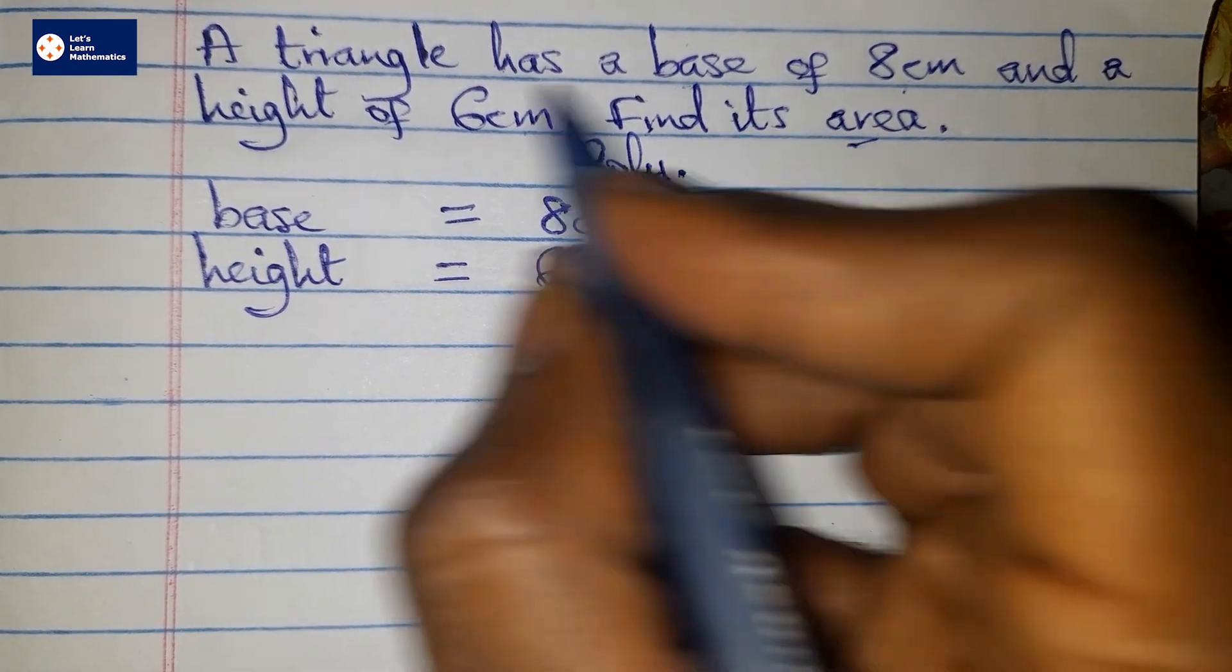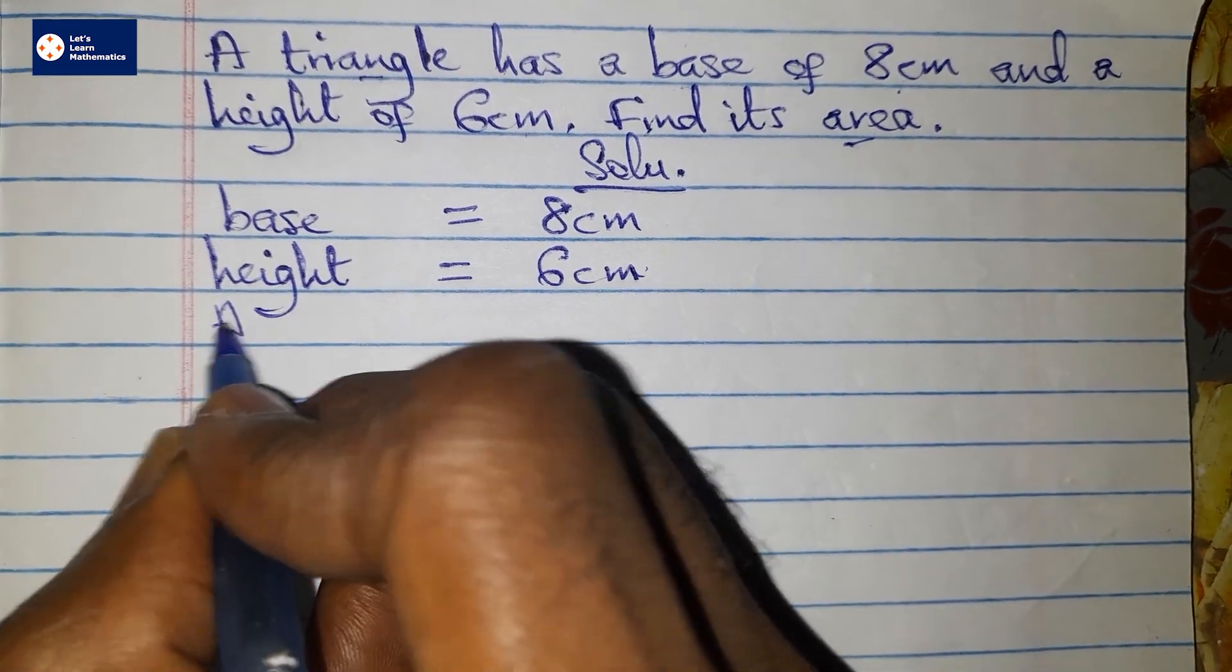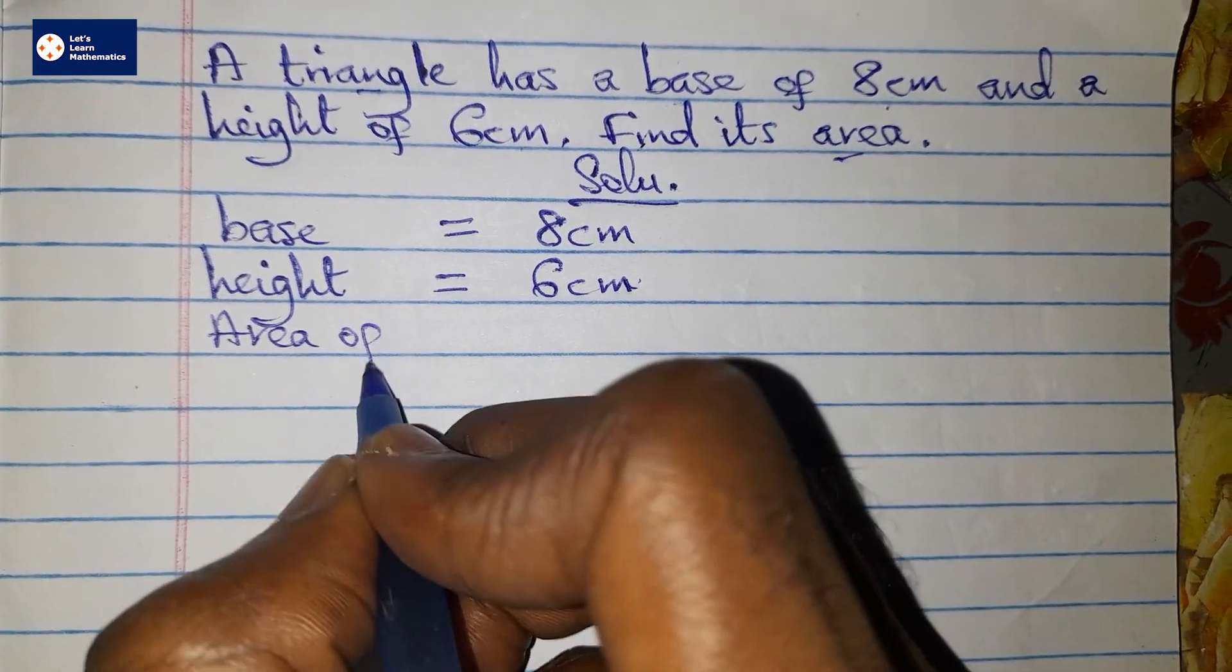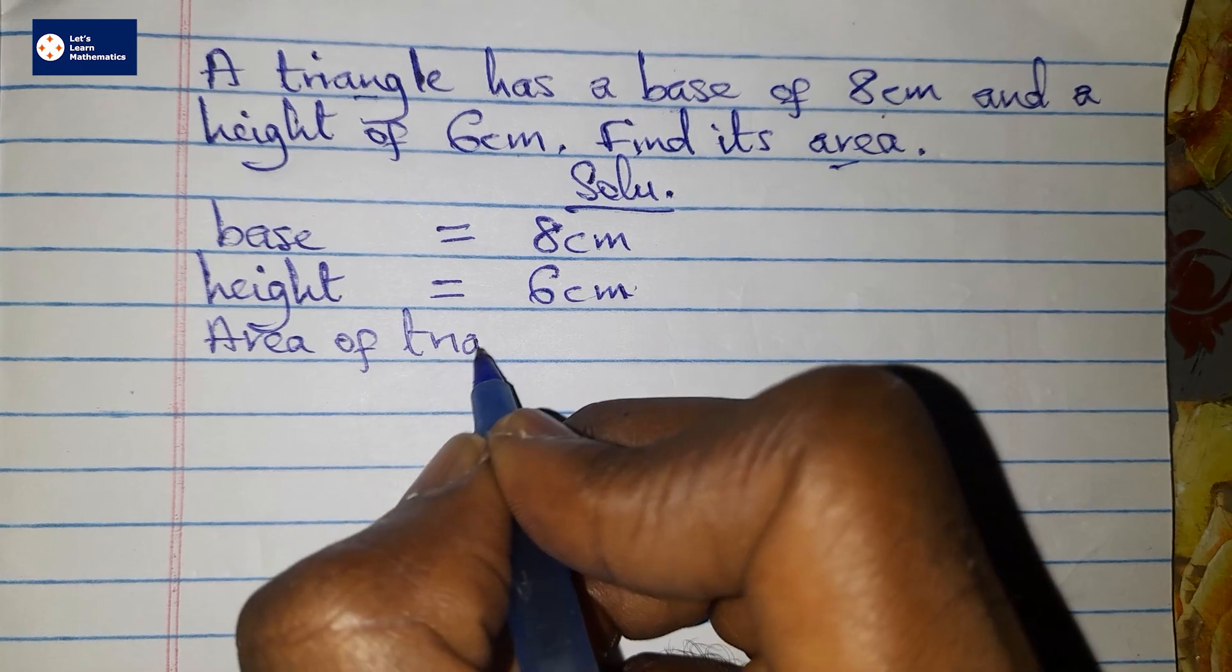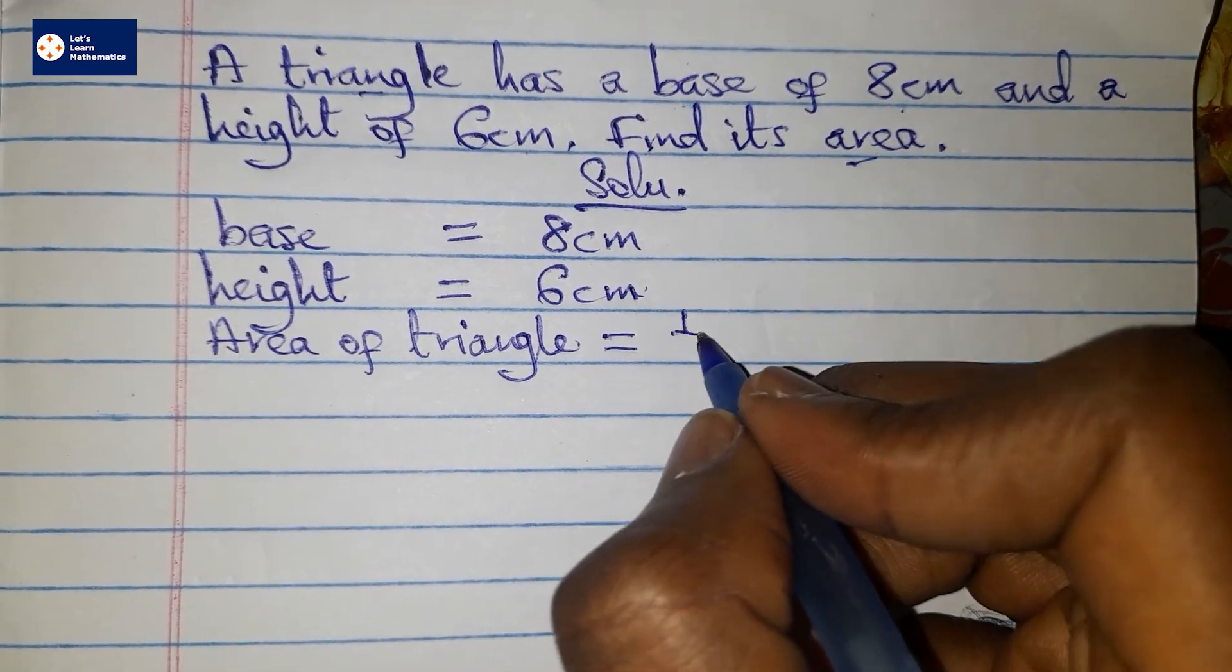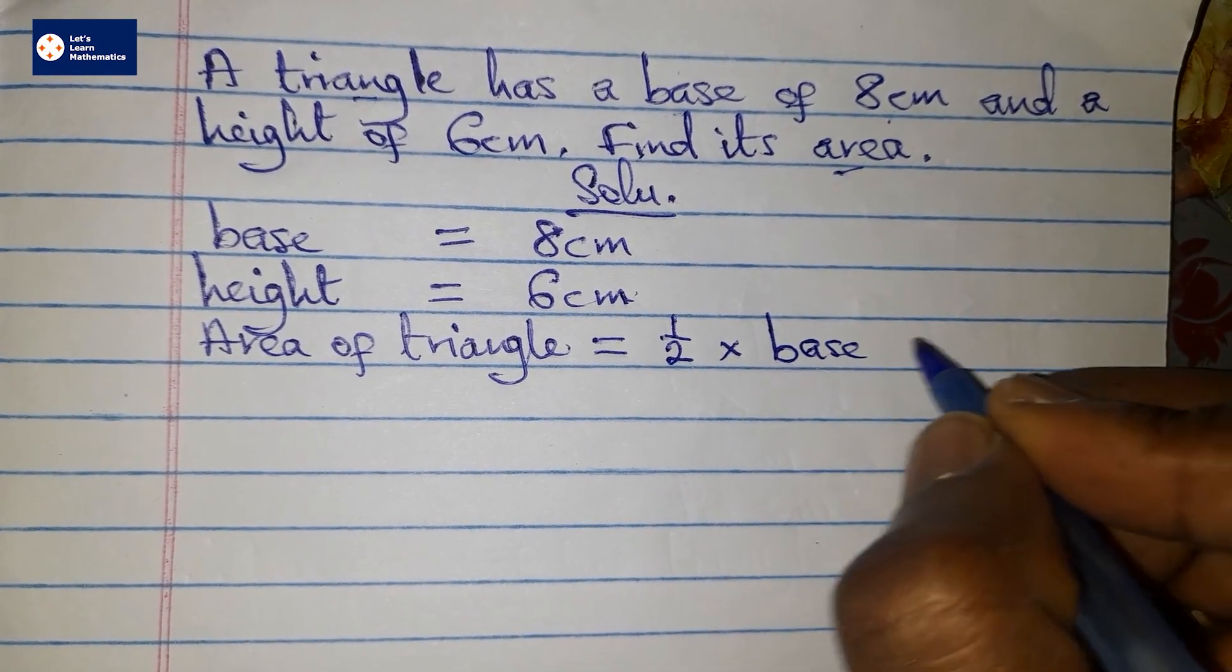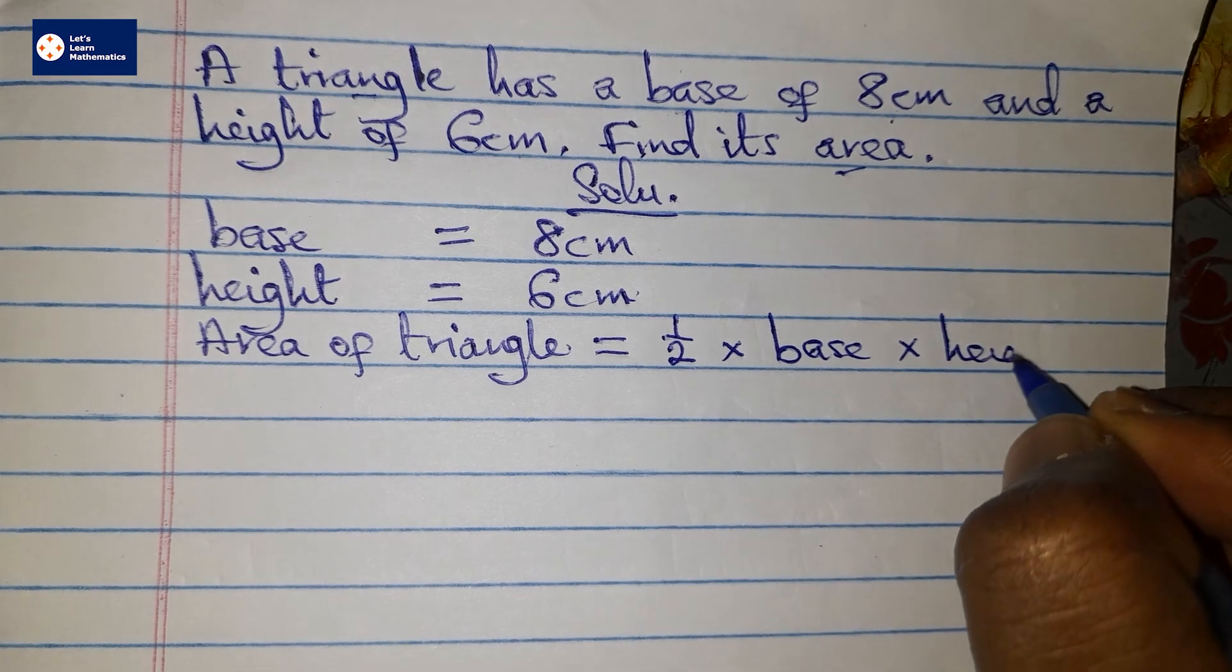We are to find the area of the triangle. We know that the area of a triangle is given as half times the base times the height.